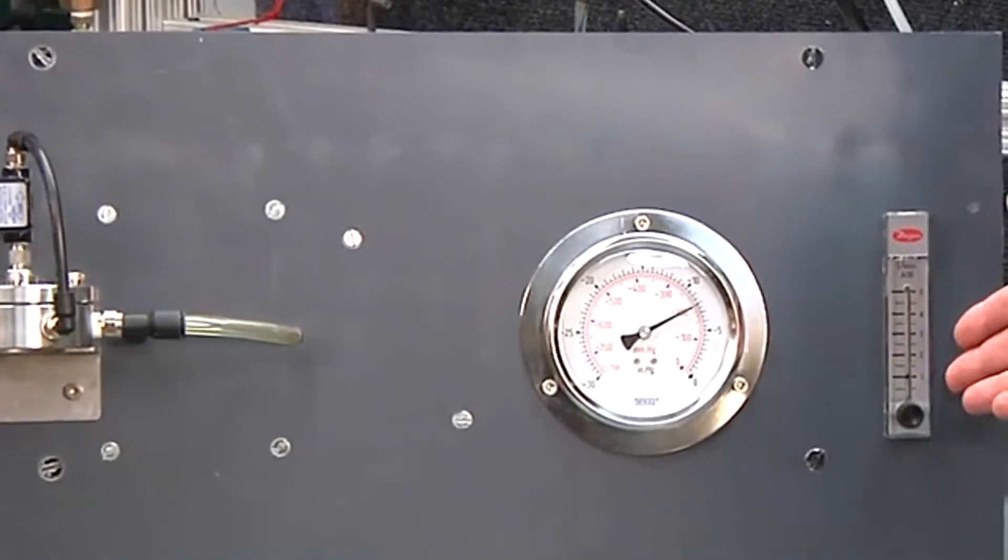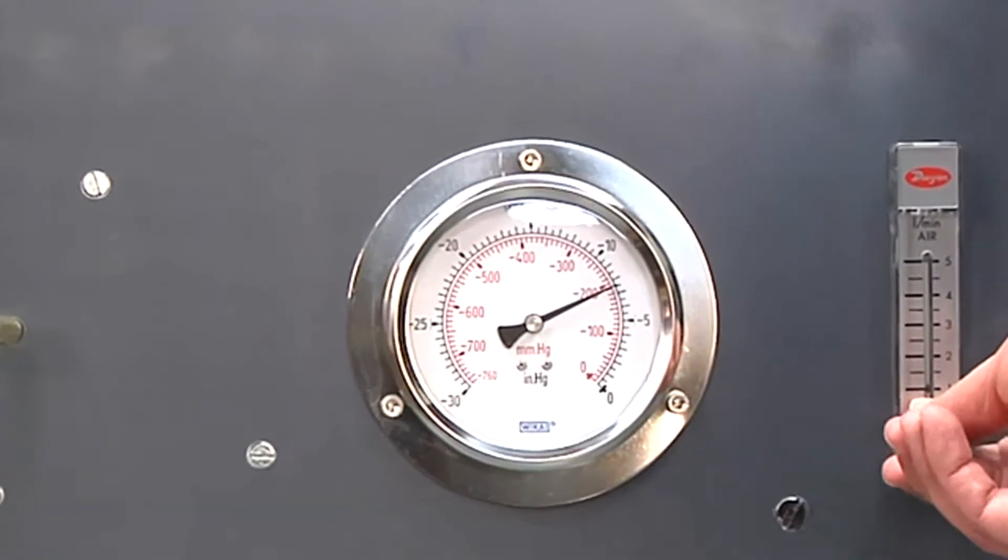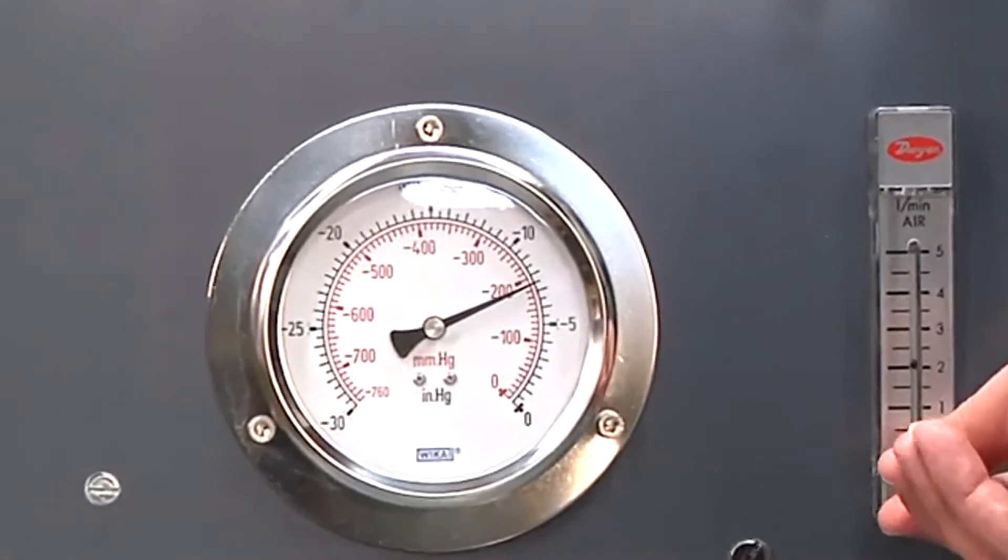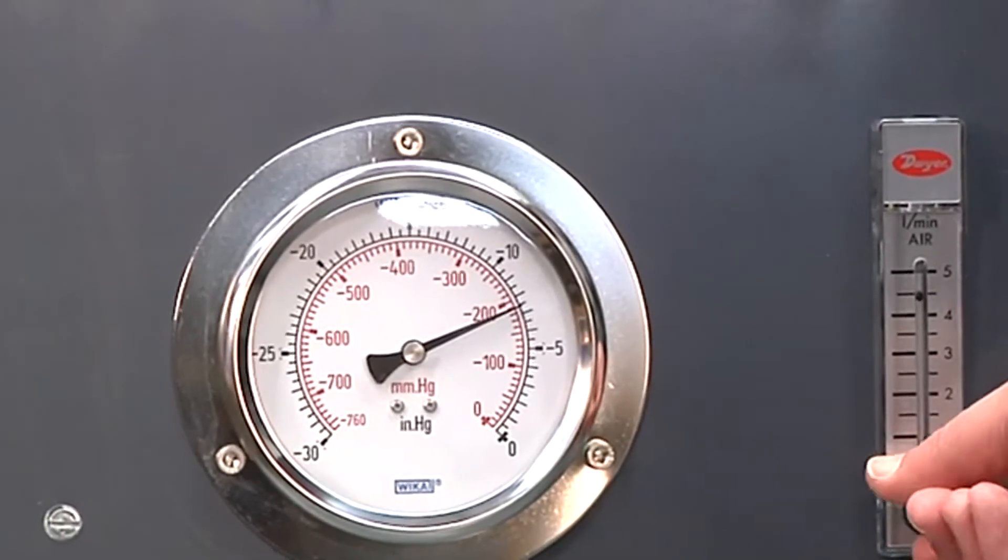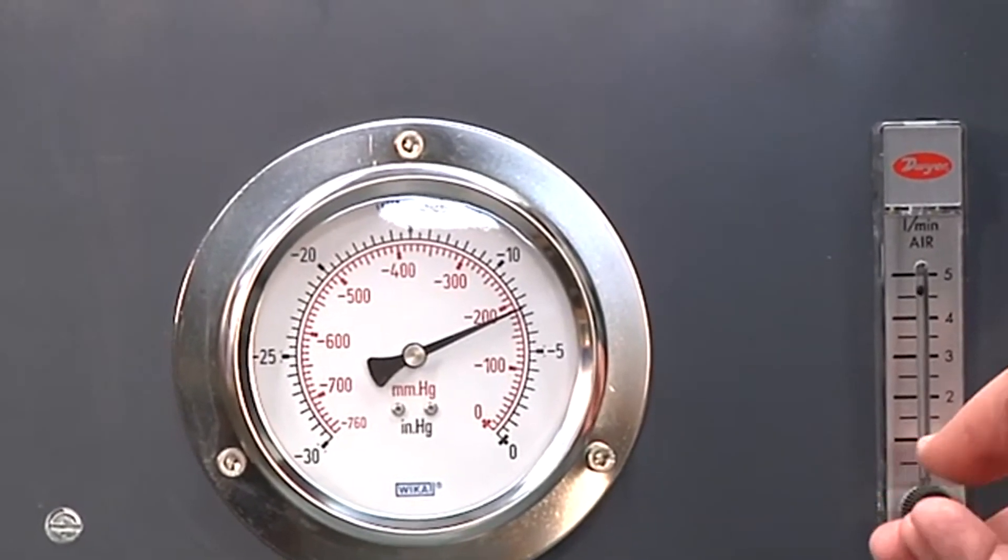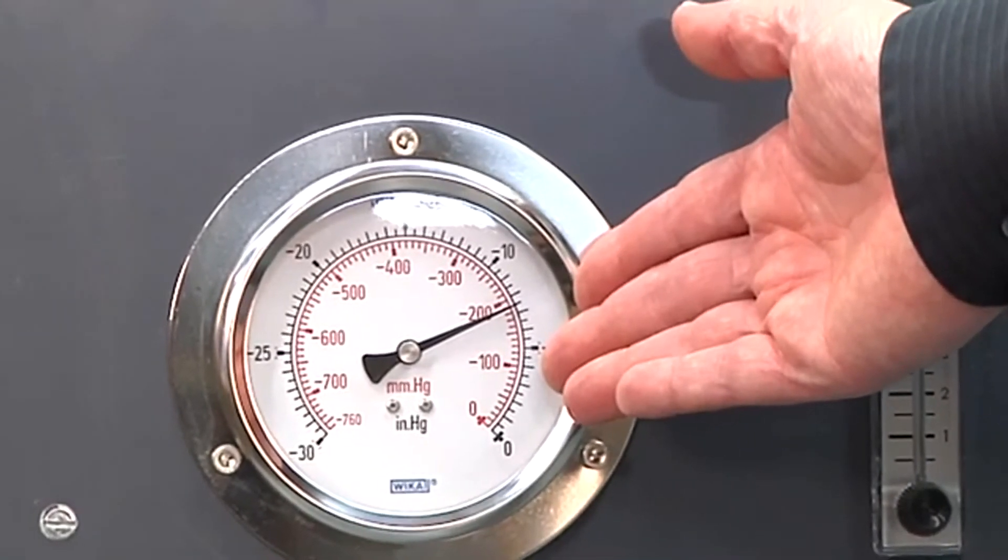I'm now going to adjust the system flow from 1 liter per minute all the way to 5 liters per minute. Over that 5x change in flow, you'll see that the system pressure was maintained at 200 millimeters of mercury